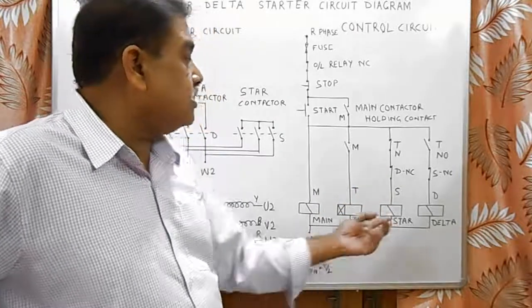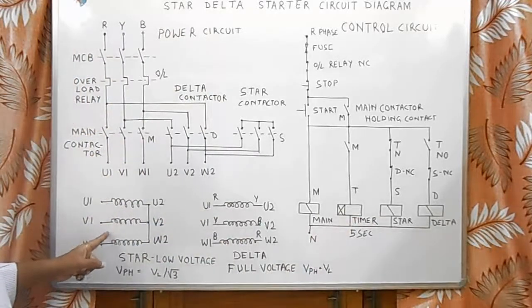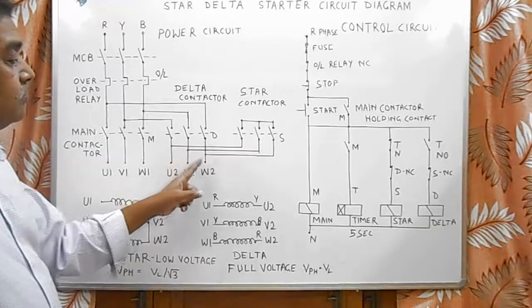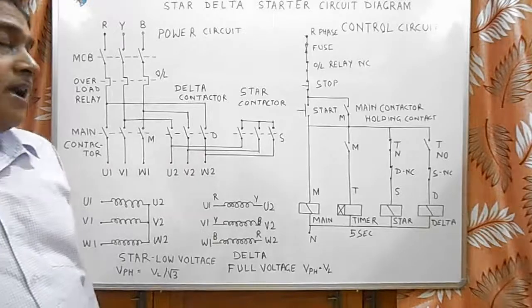As soon as M and S contactors pick up, main contactor gives supply to the three-phase winding and star contactor short-circuits U2, V2, and W2, and motor starts running in star connection.